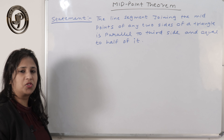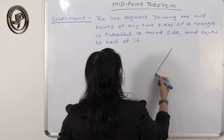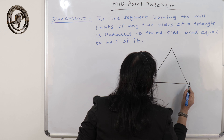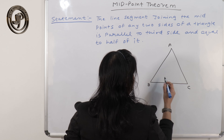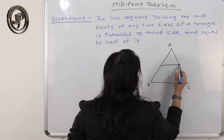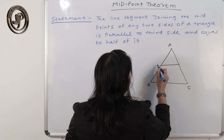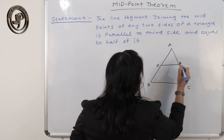This is the statement of the theorem — you must memorize the statement. Now let's see what is given in the statement. Triangle ABC in which D and E are the two midpoints — the line segment joins the midpoints of any two sides of the triangle, so D and E are the midpoints.